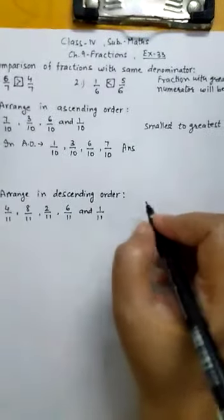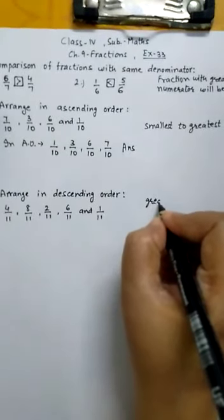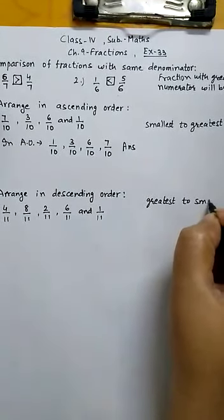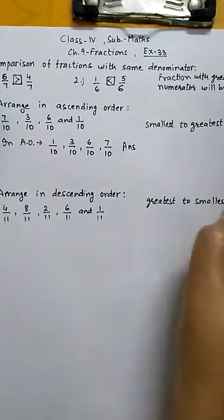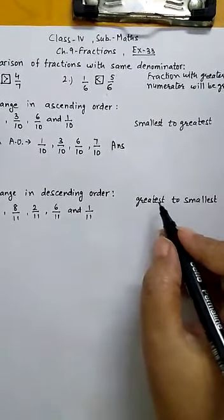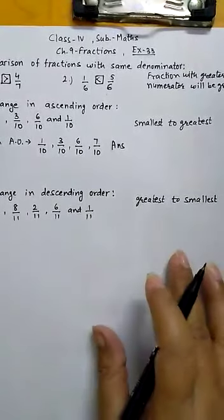In descending order, we arrange the numbers from greatest to smallest. First we write the greatest number, then smaller, smaller, and at last the smallest.